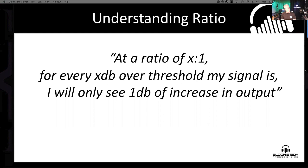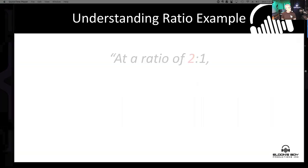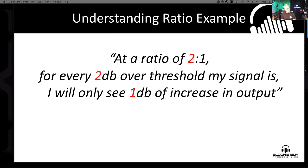At 2:1 — for every 2 dB over threshold, I will only see a 1 dB increase of output. At 4 dB over threshold, 2 dB increase in output; at 8 dB, you get the idea. At 2:1 it's not going to be grabbing and wrangling your signal to the ground — it's actually relatively subtle, just trading two for one on the output.